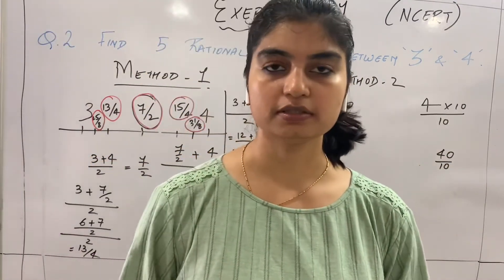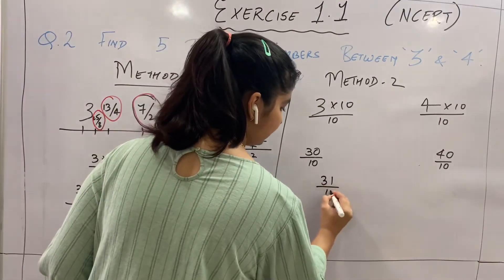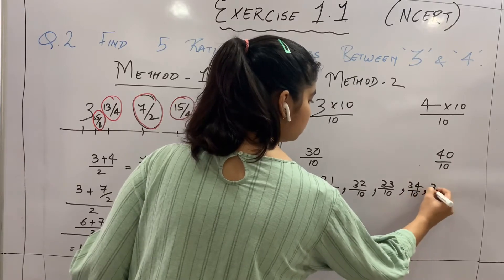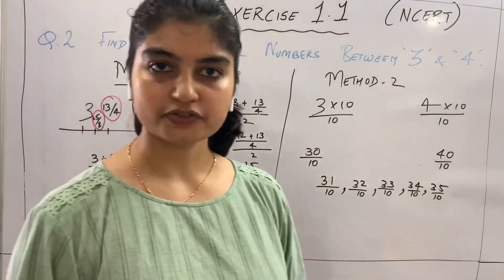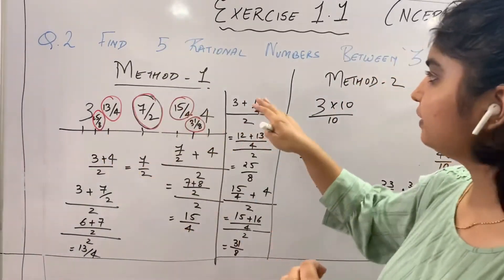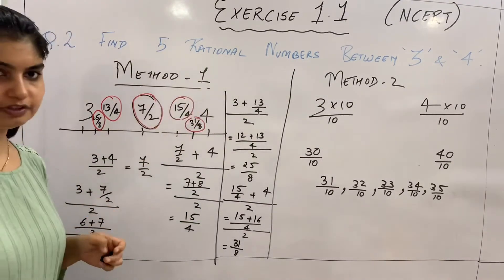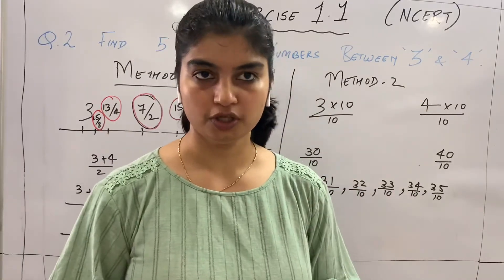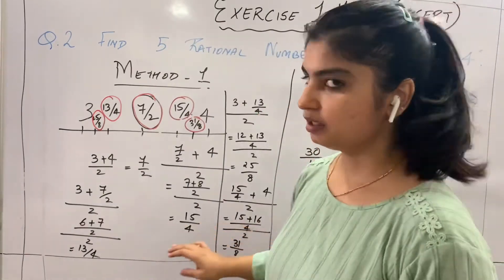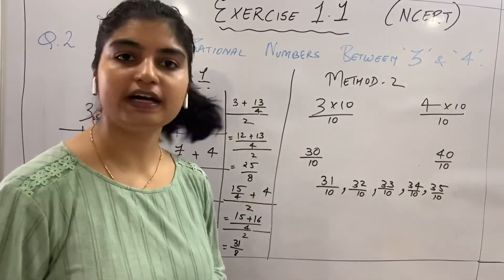Now increase the numerator of 30/10 by 1 each time: 31/10, 32/10, 33/10, 34/10, 35/10 — these are the five rational numbers between 3 and 4. The series would continue as 36/10, 37/10, and so on, but we only need five here. Method 2 is simpler and faster; just be careful while taking LCM in Method 1.